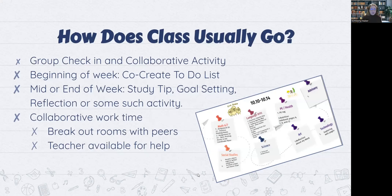So how does our class usually go? We start with a group check-in and some collaborative activity designed to get kids talking and interacting with each other. At the beginning of the week, we co-create a to-do list — this is our most recent to-do list, and it also lives on the home page of our Canvas course. Mid or end of week, we include study tips, goal setting and reflections, or some other study strategy or group work activity. We end with collaborative work time that includes breakout rooms with peers, and I am available if students need to ask for help.